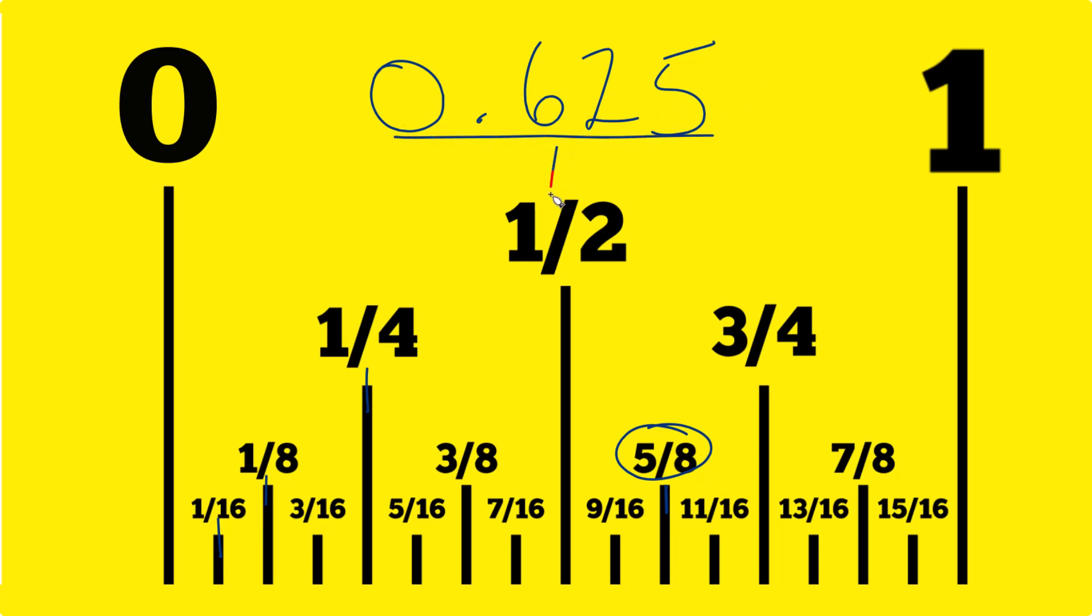We multiply the top and the bottom by a thousand, and that'll give us a whole number: 625 over a thousand, which we can then simplify.